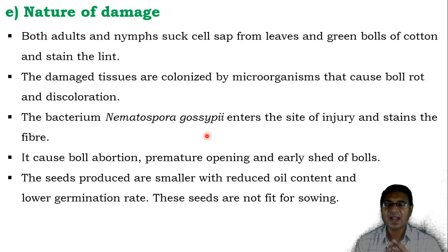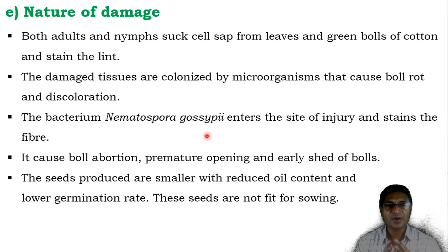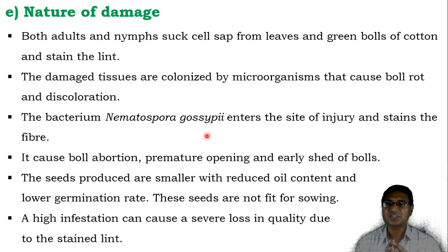Due to severe attack by the adult and nymph of the red cotton bug, it causes boll abortion, premature opening, and early shedding of the bolls. The seeds produced are smaller with reduced oil content and lower germination rate. These seeds are not fit for sowing. High infestation can cause severe loss in quality due to stained lint.